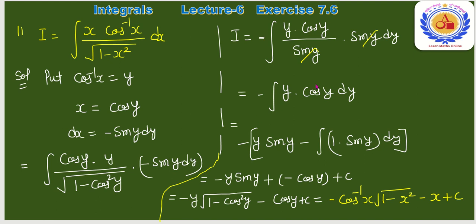−∫y·cos y dy पर by parts: −[y·sin y − ∫sin y dy] = −[y·sin y + cos y] + C = −y·sin y − cos y + C।